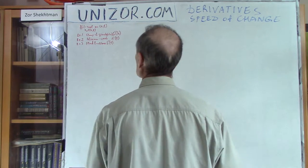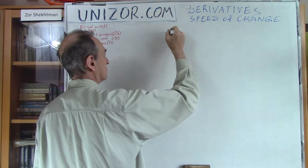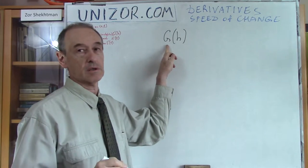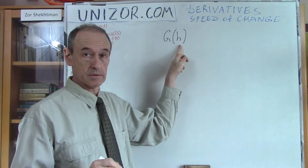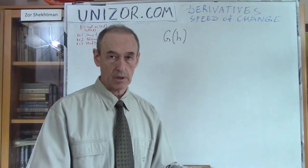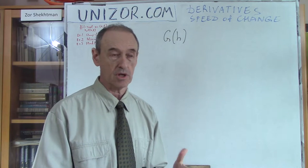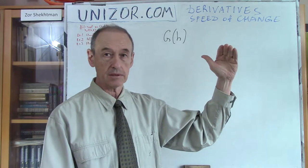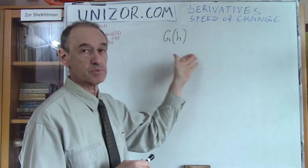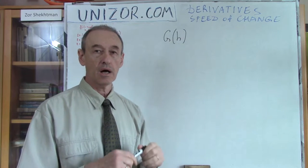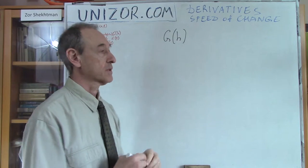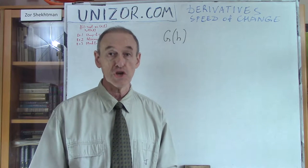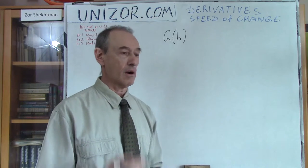Example number one. Consider a function which is the dependency of gravity on elevation above the level of the Earth. Obviously, if you are at the level of the Earth, you have a certain value for the force of gravity. But if you go further from the Earth, this gravity decreases because you are further from the center of the Earth. We actually have this particular function, meaning we can measure gravity at every altitude, at every level of elevation. My question is: how is gravity changing with elevation? Is it fast? Is it not fast? How can it be checked?